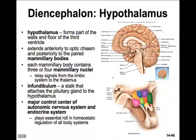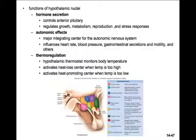The hypothalamus is the major control center of the autonomic nervous system as well as the endocrine system, playing essential roles in homeostatic regulation of all the body's systems. It controls the anterior pituitary by regulating growth, metabolism, reproduction, and the stress response. It's also the major integrating center for the autonomic nervous system, influencing heart rate, blood pressure, gastrointestinal secretions, and motility.